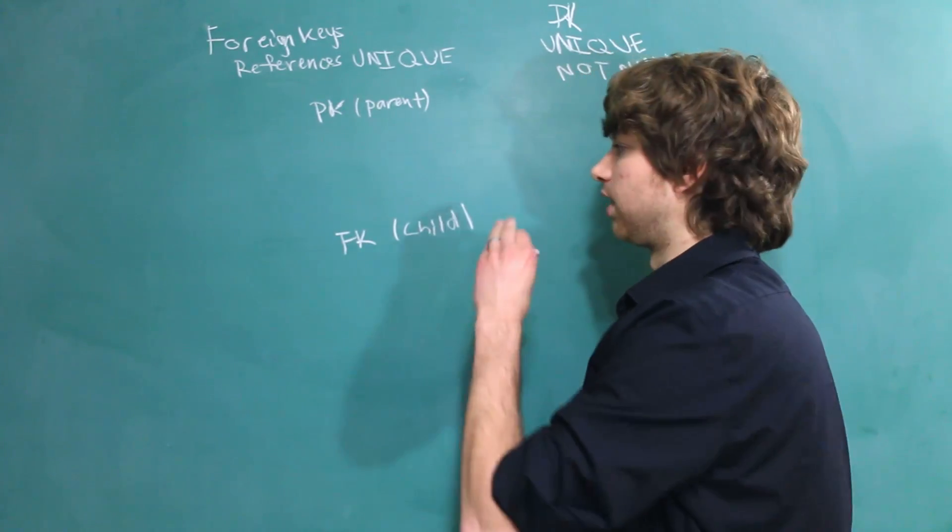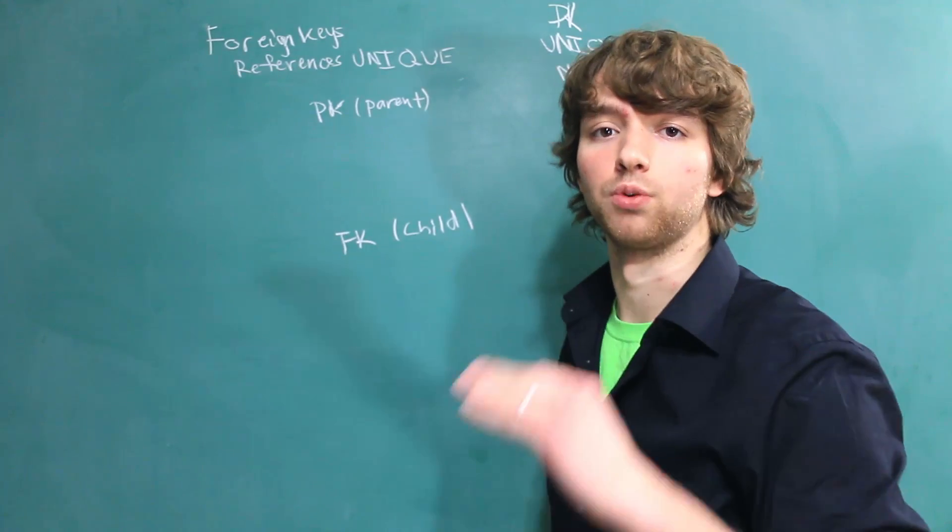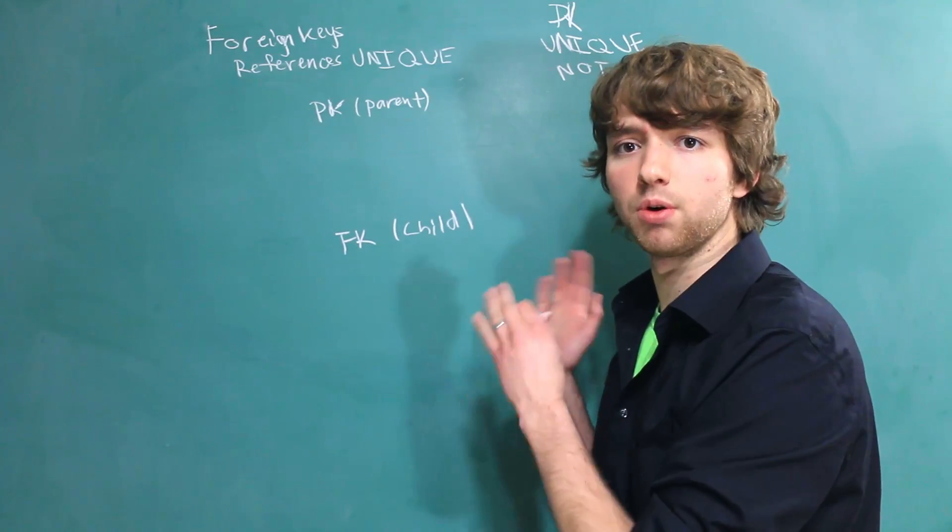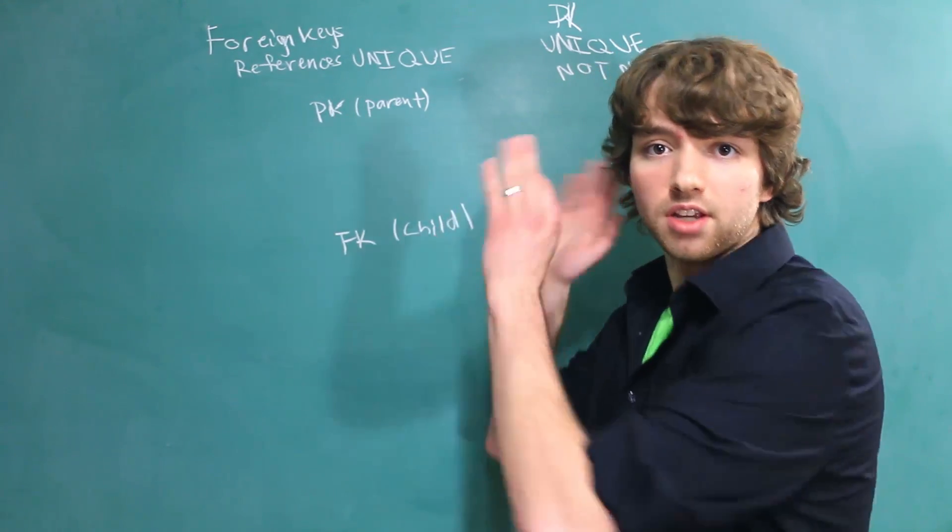So, when we do this, rather than thinking of a column referencing another column, think of an individual row referencing an individual row. Because when we make a foreign key column, that's essentially what we're saying. We're saying a row for this column has to reference another row.